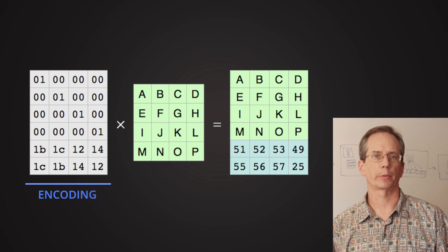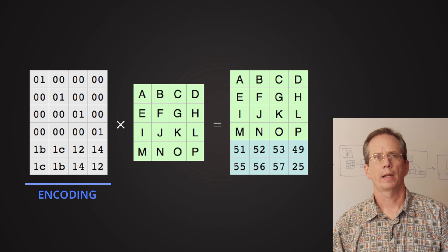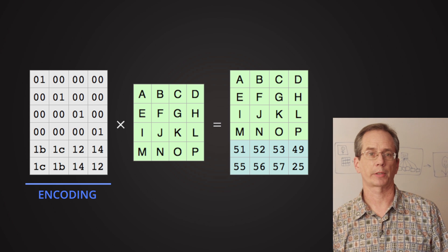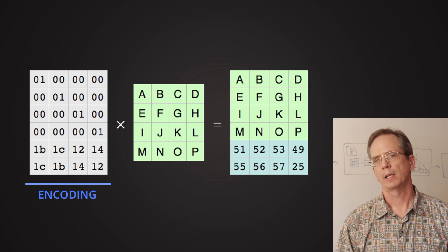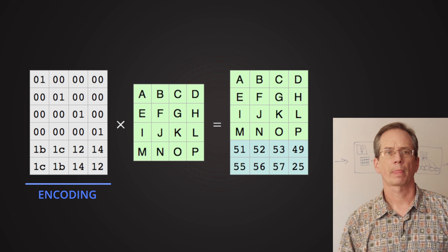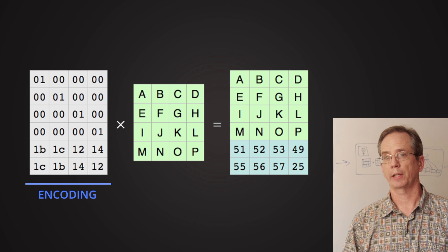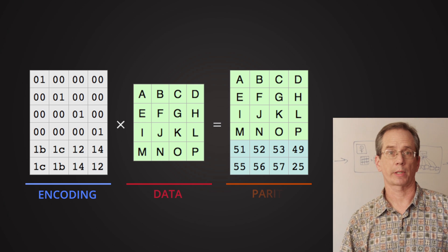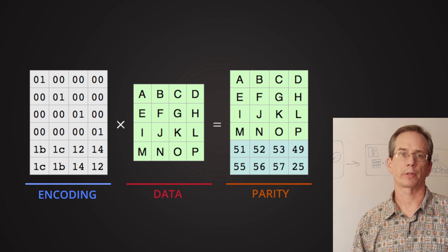If you look at the matrix on the left, which is the encoding matrix, and you remember some of your matrix algebra, you can see that the top part of the matrix is what's called an identity matrix. It's got ones down the diagonal and zeros in the rest of the matrix. So when you multiply it by your original data, you get your original data. Now this is good computationally because it means you don't have to do anything. That part of the answer is already calculated.